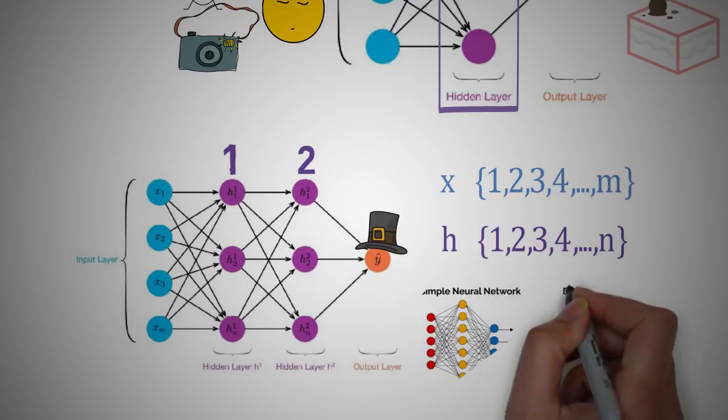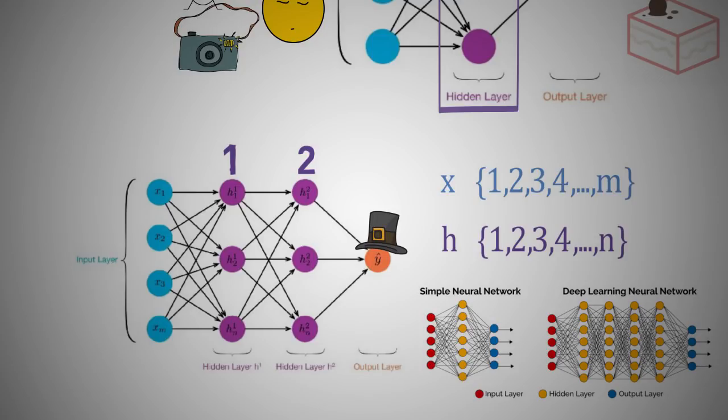The output is labeled as y with a hat which is our predicted output. A neural network with more than one hidden layer is also referred to as deep learning or a deep neural network.